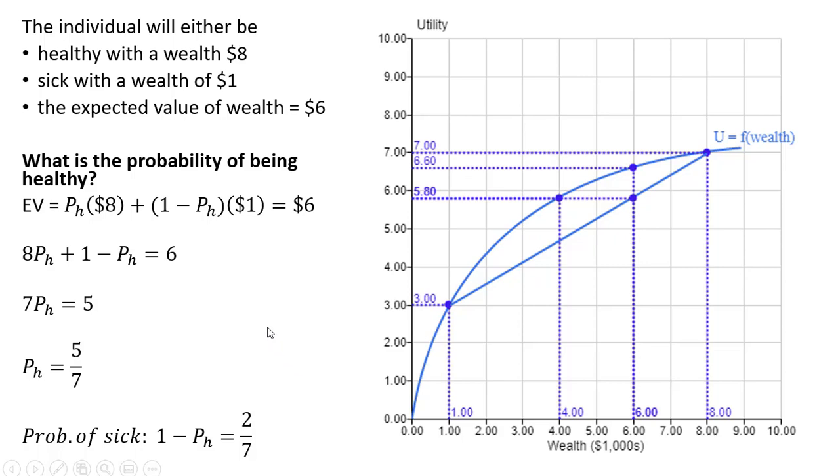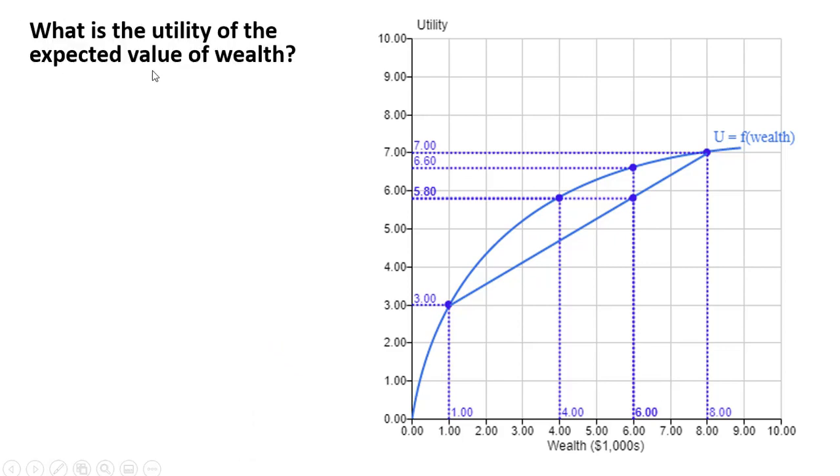Alright, let's move on. What is the utility of the expected value of wealth? So the expected value of wealth is $6, or $6,000, and we're going to plug that into the utility function. Come across, and we get an answer of 6.6.